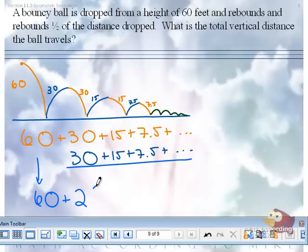And use that a₁ over 1 minus r formula. So a₁ here would be 30, and r would be one-half.